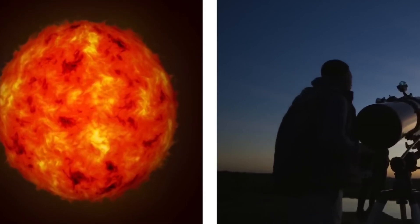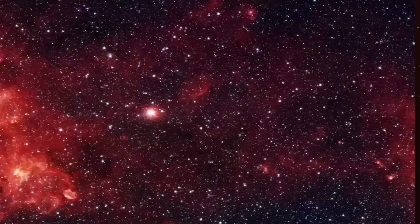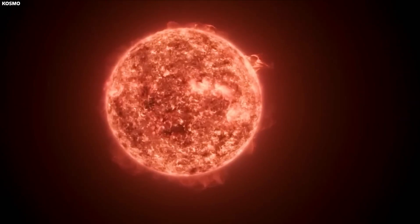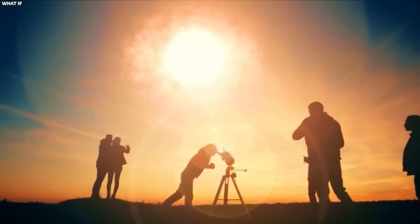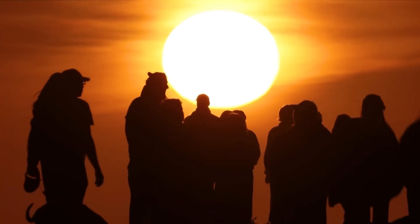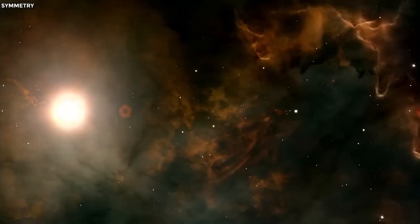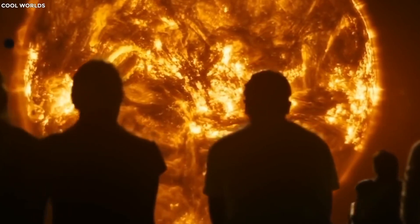Betelgeuse is classified as a semi-regular variable star, meaning it experiences multiple cycles of fluctuating brightness due to variations in its size and temperature. This red supergiant is known to exhibit two main periods of light pulsation. The first period lasts 400 days and is believed to be caused by pulsations in the fundamental mode. The second period is a longer cycle of approximately 5.6 years, and its origin remains unknown.